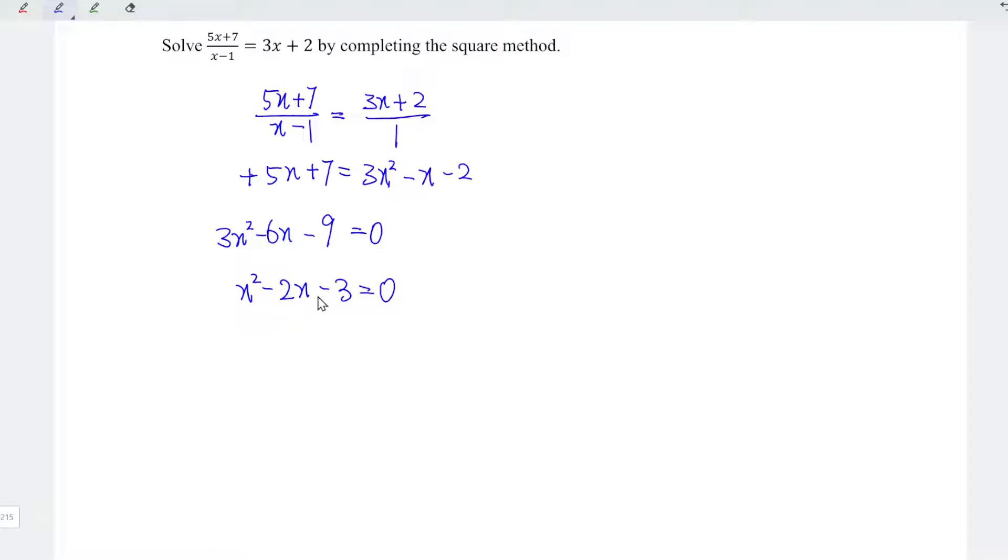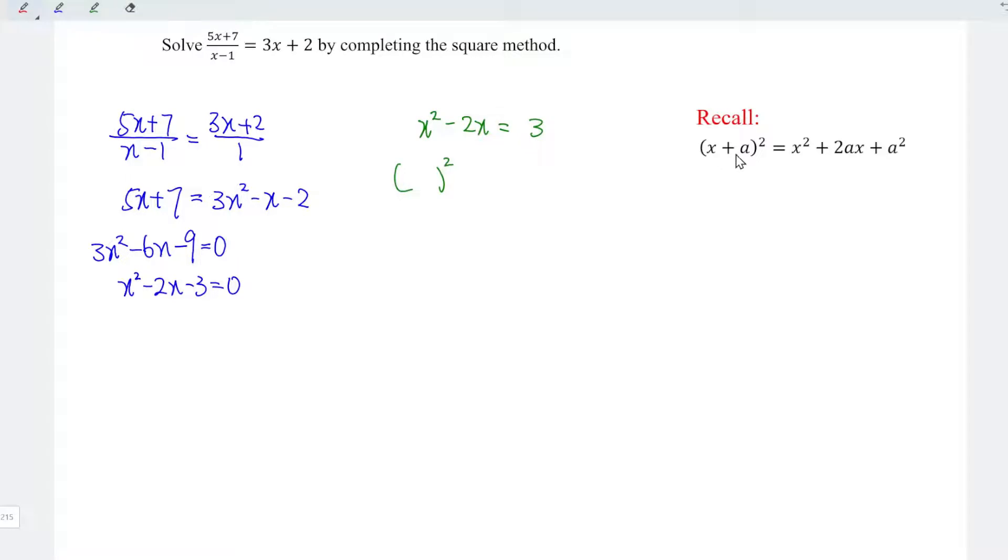To complete the square, constant always bring to the right. So we have x squared minus 2x is equal to plus 3. Let's complete the square. Recall that when we expand the square, this term always becomes double. So which means that when we reverse the process, this should be half of its original value. So we should take 2 divided by 2, which is equal to 1.